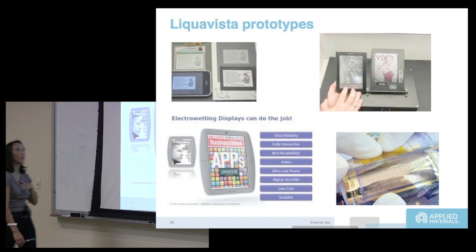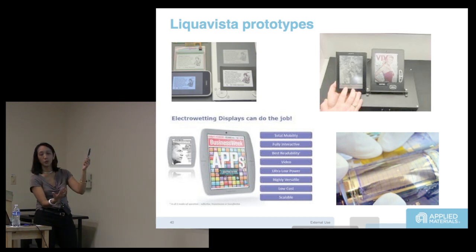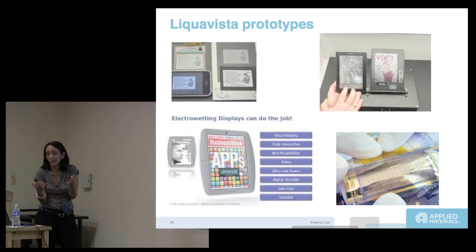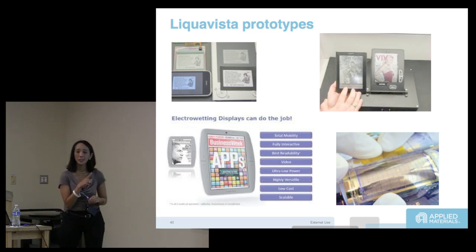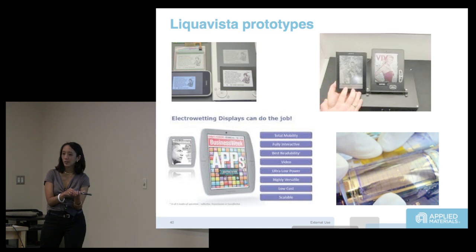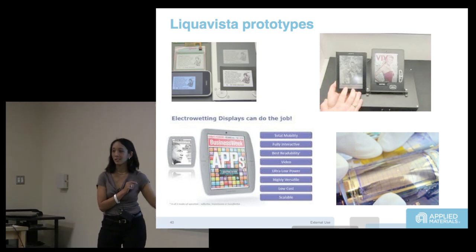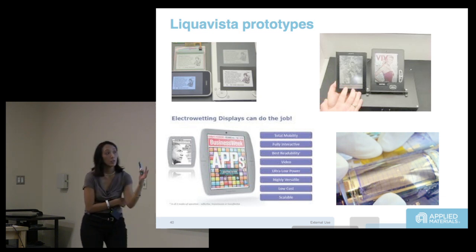Why did we invest? We went to their labs back in 2009 and put my Kindle next to their prototype, pressed play, and they did video. It was the first time you could see a Kindle-type device doing video — Kindle Fire uses LCD, but this was different. Also, because you can make the hydrophobic polymer layer on plastic, they were actually trying to do flexible electrowetting displays. That's one of our investments.